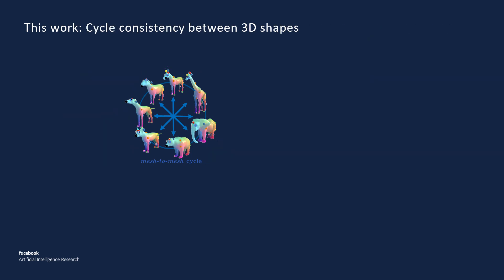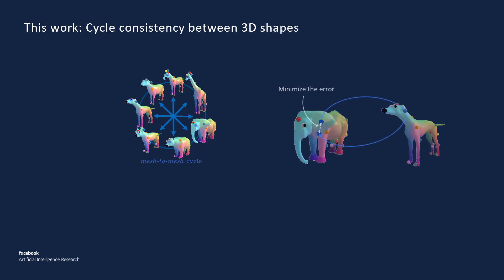Let's look in more detail at the proposed cycle consistency loss between 3D shapes. We use the vertex embeddings to compute probabilistic vertex correspondences for every pair of meshes. After projecting a vertex onto another mesh, it should ideally be mapped back to itself. By minimizing the reprojection error, we enforce a cycle between shapes.